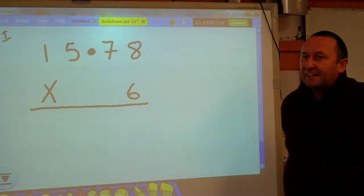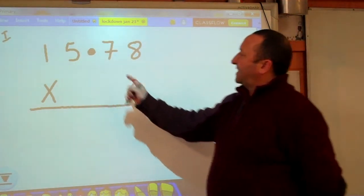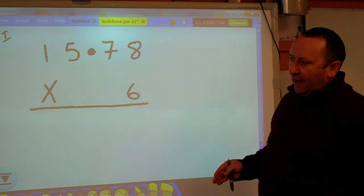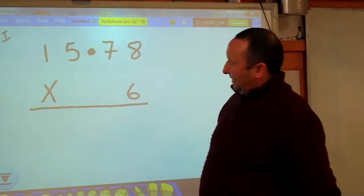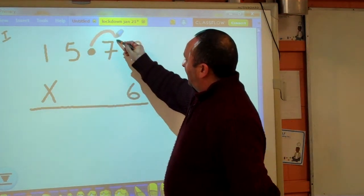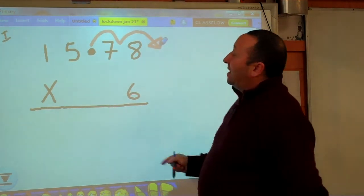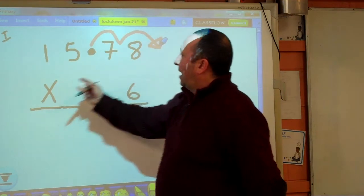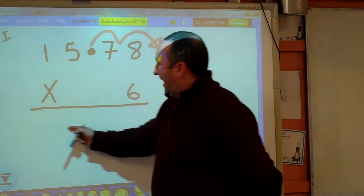So, moving on from that, I've been asked to multiply a decimal number 15.78 by 6. Before I start this multiplication, I'm going to pretend that there's no decimal point in that number. I'm going to move that decimal point two places to the right out of the way. So I'm going to pretend that that number is 1578 multiplied by 6, and I won't put my decimal point back in until the end.